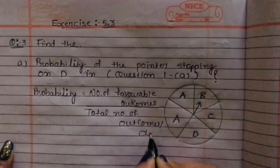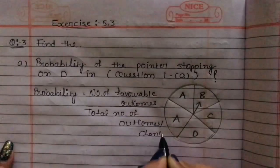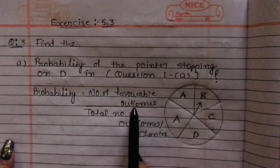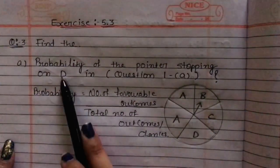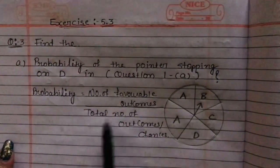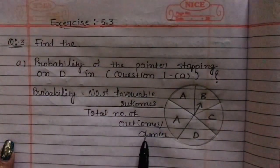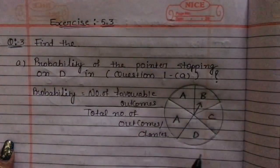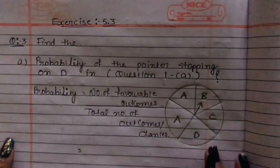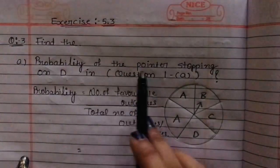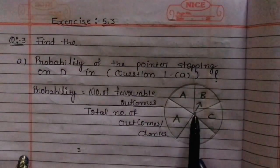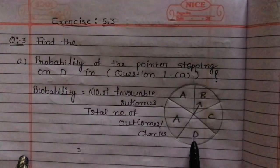और chances बोल सकते हैं। So now number of favorable outcomes, that means कि हमें किसकी probability पूछी गई है, उसके हमें chances देखना है, and then total number of outcomes, यानि कि total numbers कितने हैं। So यहाँ पर हमें किसकी probability पूछी गई है — probability of the pointer stopping on D, कि यहाँ पर यह जो pointer है, वो D पर आके stop करें।